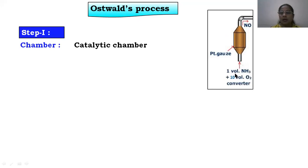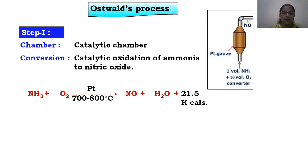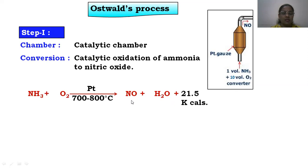In this first chamber, ammonia and oxygen from air are allowed to enter. The conversion that takes place is catalytic oxidation — ammonia is converted to nitric oxide. Ammonia (NH3) reacts with oxygen in the presence of the catalyst platinum (Pt) at a temperature of 700 to 800 degrees Celsius, and the products formed are NO (nitric oxide), water, and a large amount of energy.